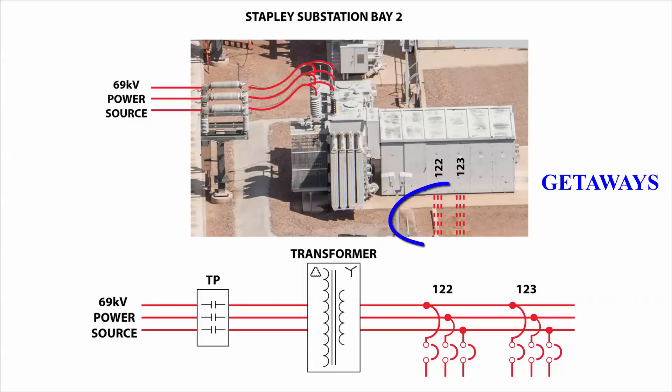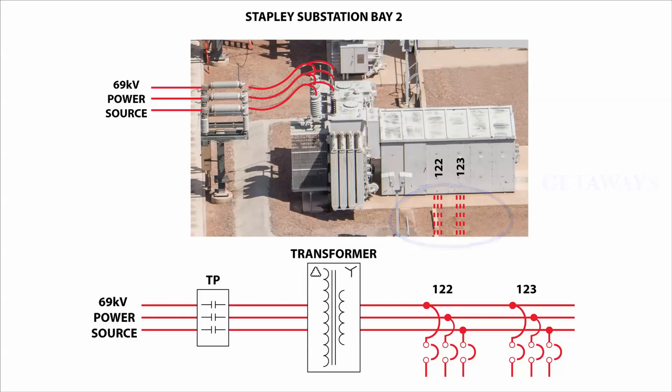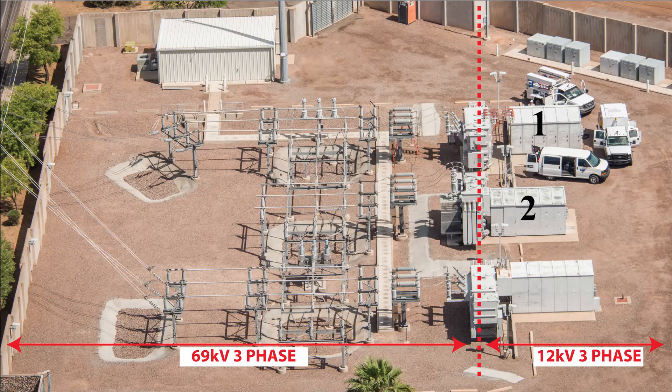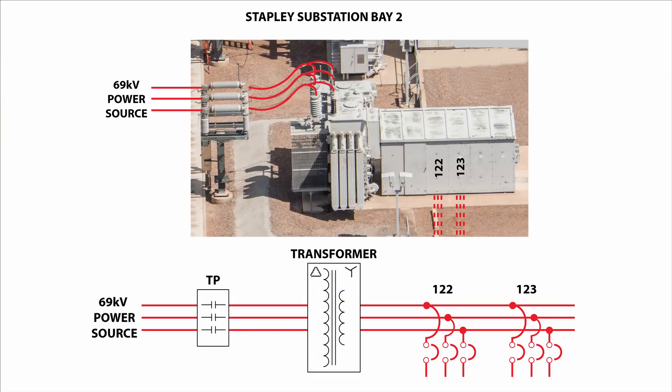The 12 kV circuits supply power to customers via underground feeders called getaways. You can see three bays at Stapley substation numbered from one to three, top to bottom. Bay two at Stapley is the middle bay. The diagram below the photo shows the connection of components in the substation.